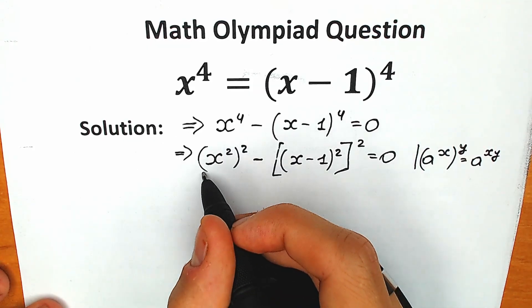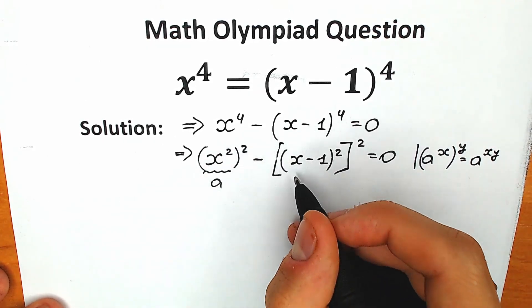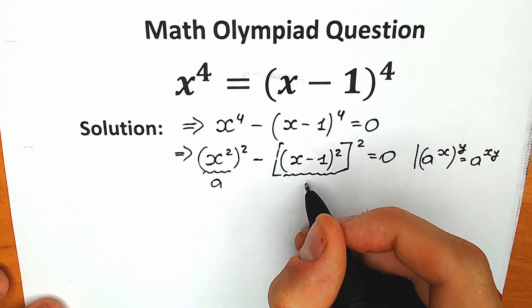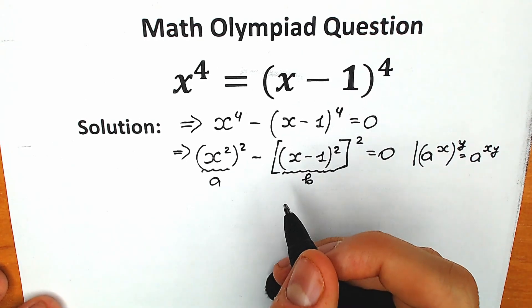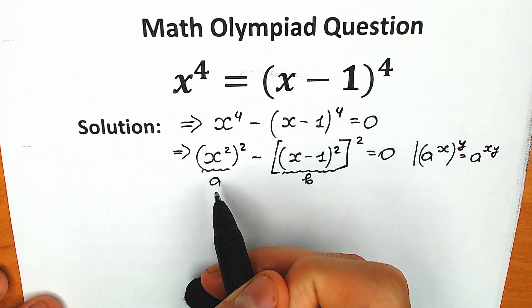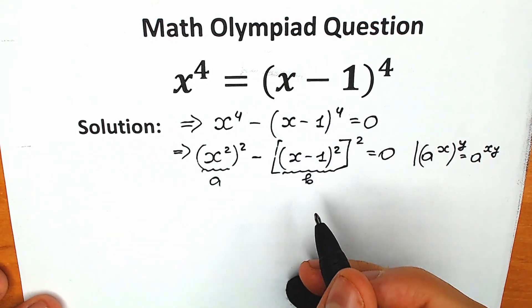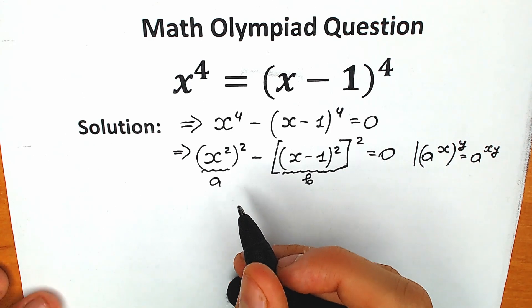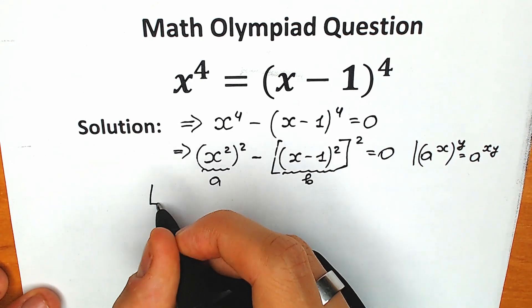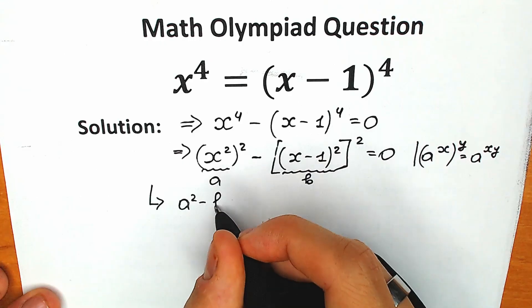Right now, this x squared is our a, and x minus 1 to the second power is our b. Let's see this from a different angle — we can consider it as a difference of squares: a squared minus b squared.